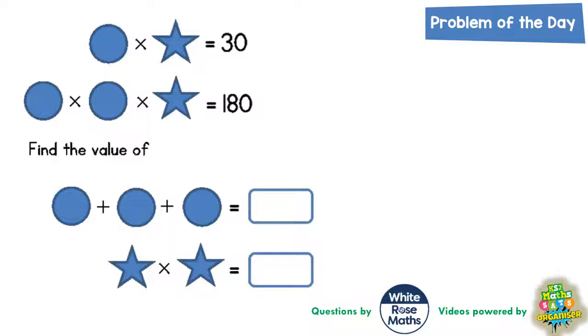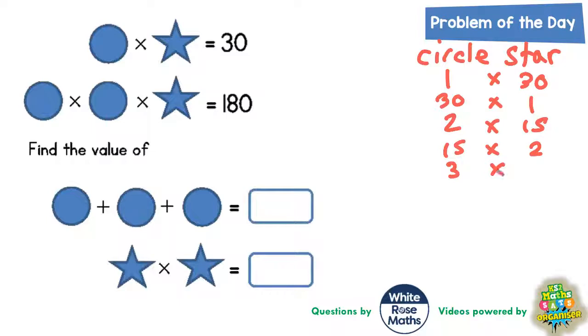So what we're going to do first of all is brainstorm a list. What could these values be when we times them together? We could have 1 times 30 or 30 times 1, we could have 2 times 15 or 15 times 2, we could have 3 times 10 or 10 times 3, and 5 times 6 or 6 times 5.